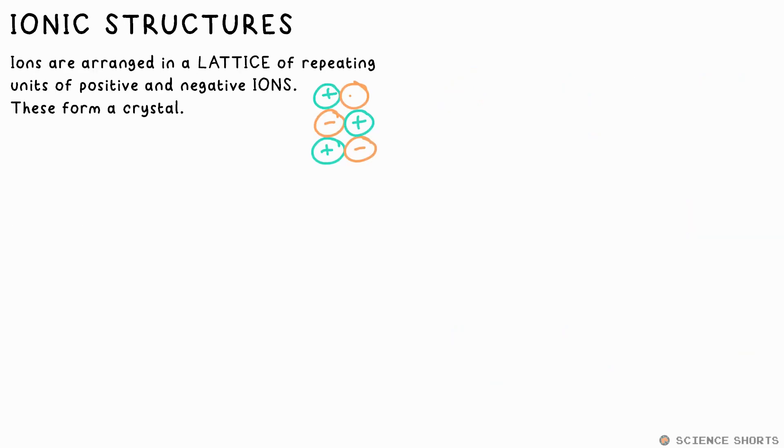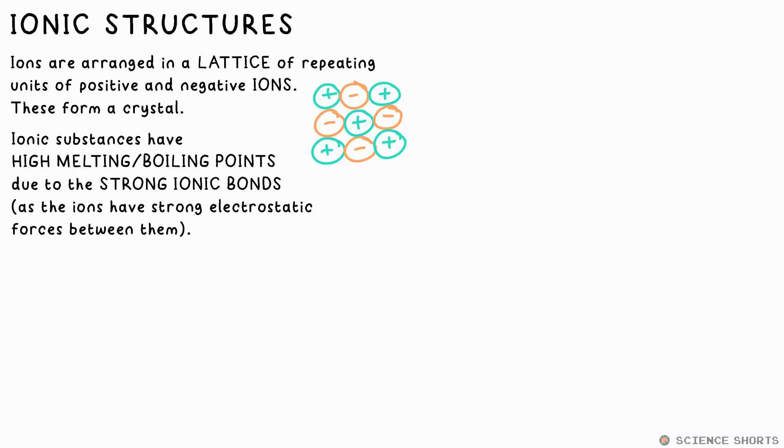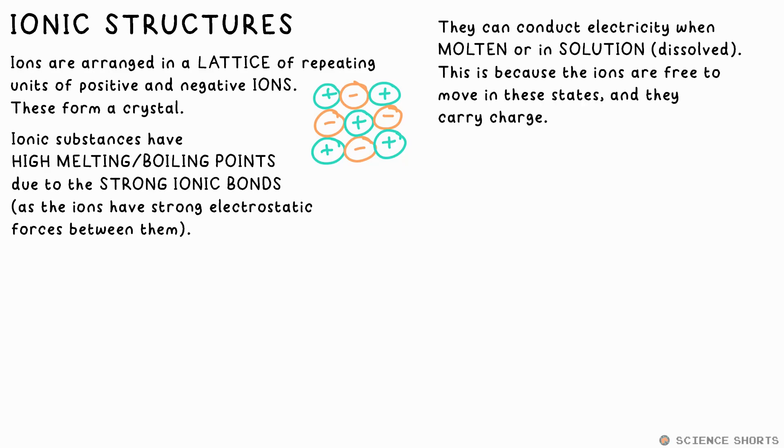Ionic compounds consist of lots of repeating units of these ions in a lattice to form a crystal. They have high melting points and boiling points due to the strong electrostatic forces that need to be overcome. They can conduct electricity but only when they're in liquid form, that is molten, or dissolved in solution. That's because the ions are free to move in both cases, and they carry charge.